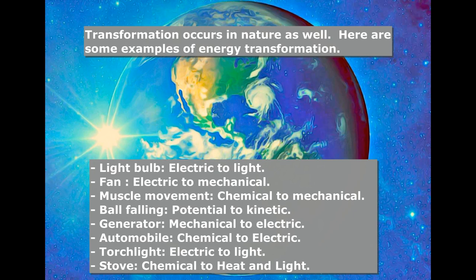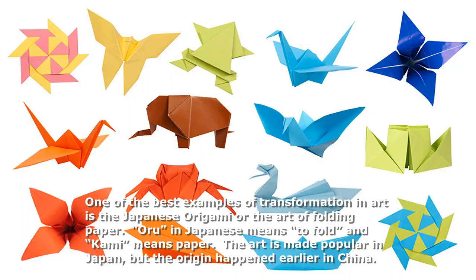In automobile, chemical to electric. In torchlight, electric to light. And in stove, chemical to heat and light. One of the best examples of transformation in art